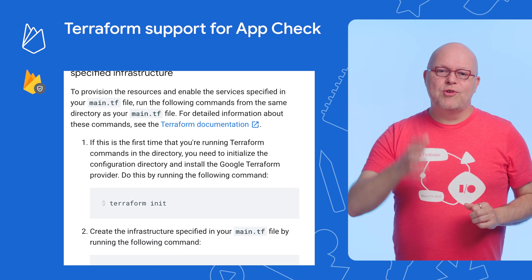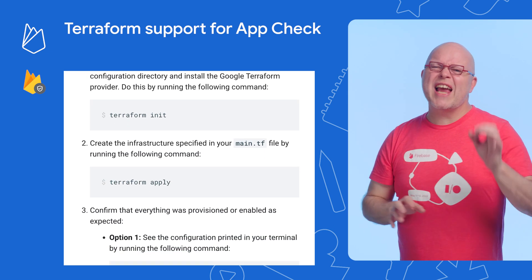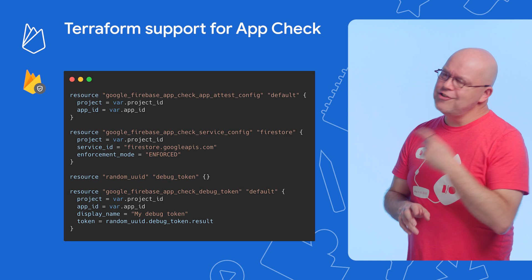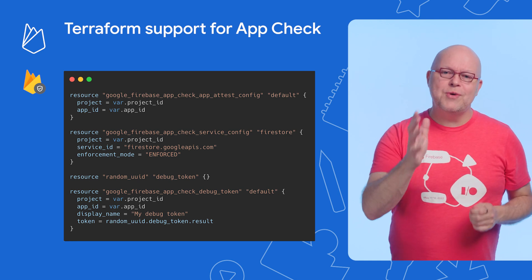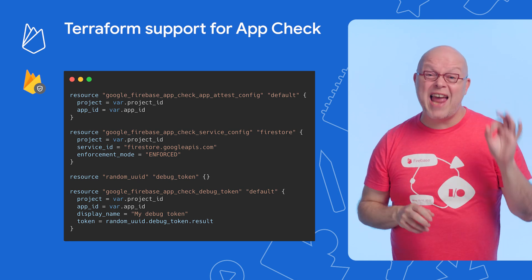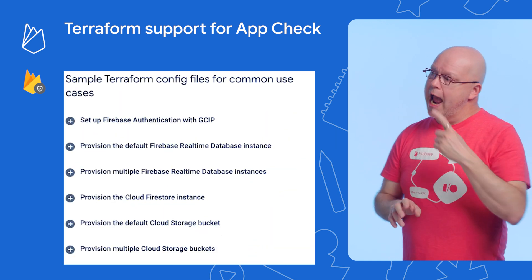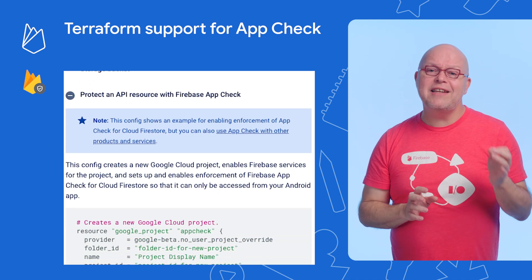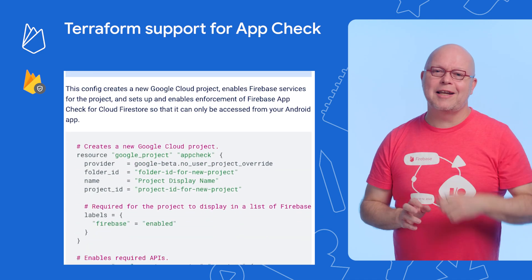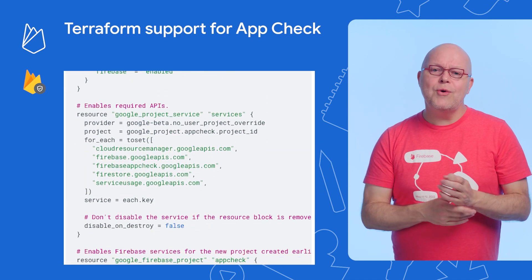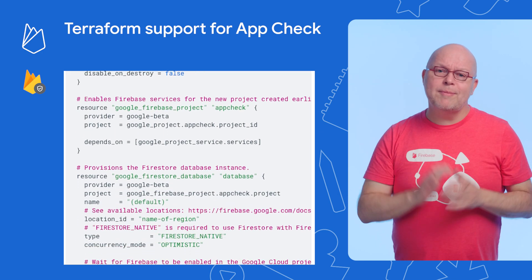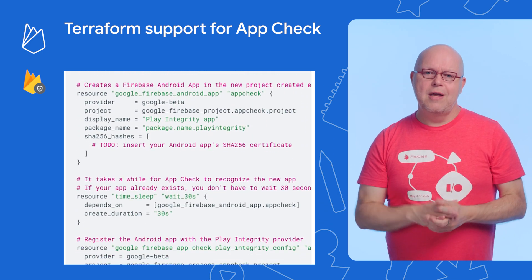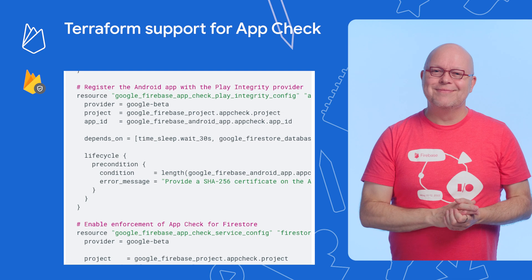If you use Terraform to automate the creation of new projects, you can now set up AppCheck support in those scripts too. Here's just a snippet that you need to protect your Firestore database if you have an app for Apple platforms, and here's a more complete example for Android apps that you can find in the documentation linked below. Today, you can turn on AppCheck via Terraform for real-time database, Firestore, authentication, and cloud storage. Other Firebase products will be added soon.